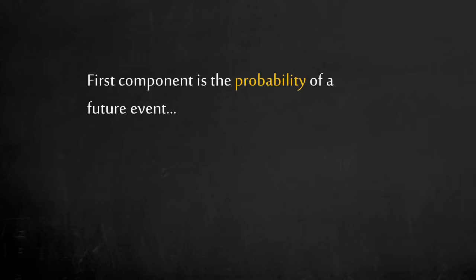The first component is probability. This expresses the uncertainty of future events. Think of flipping a coin. What is the uncertainty of the outcome before, and the uncertainty after the result is revealed? The probability of two possible outcomes is 50% before but 100% after. What changed? The state of knowledge. Probability is the expression of uncertainty.